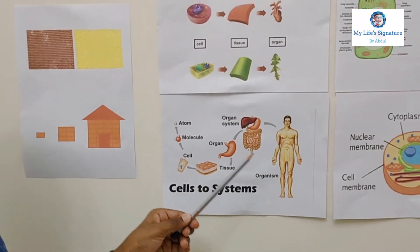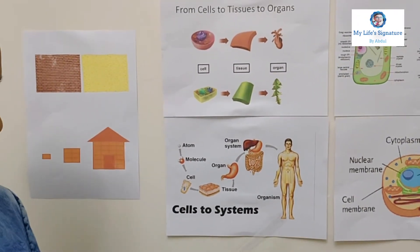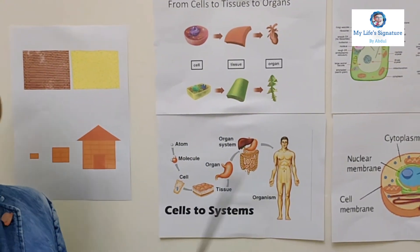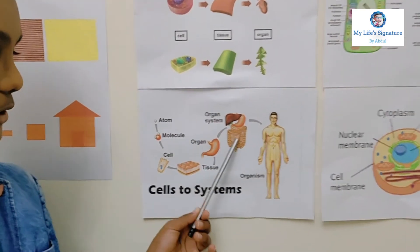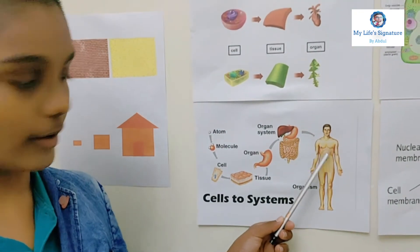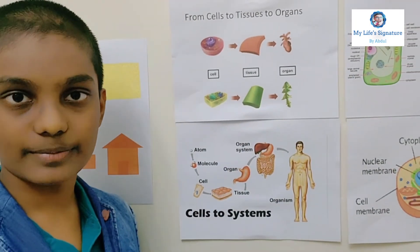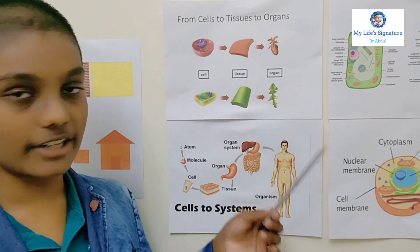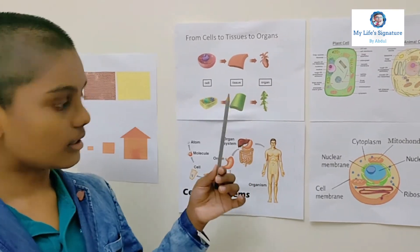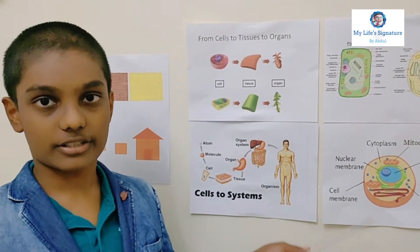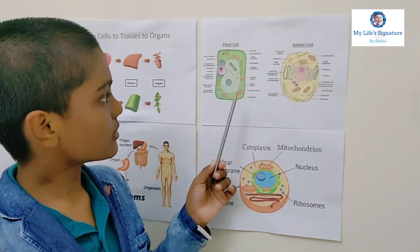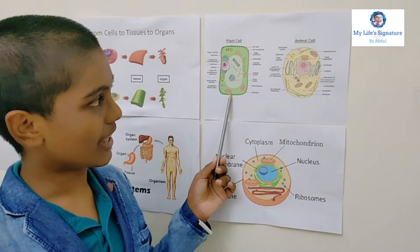Many rooms form a house, just like many organs form an organ system. And we all know that many organ systems form an organism — organ systems like the nervous system, digestive system, respiratory system, and so on. So here we have a plant cell and an animal cell.